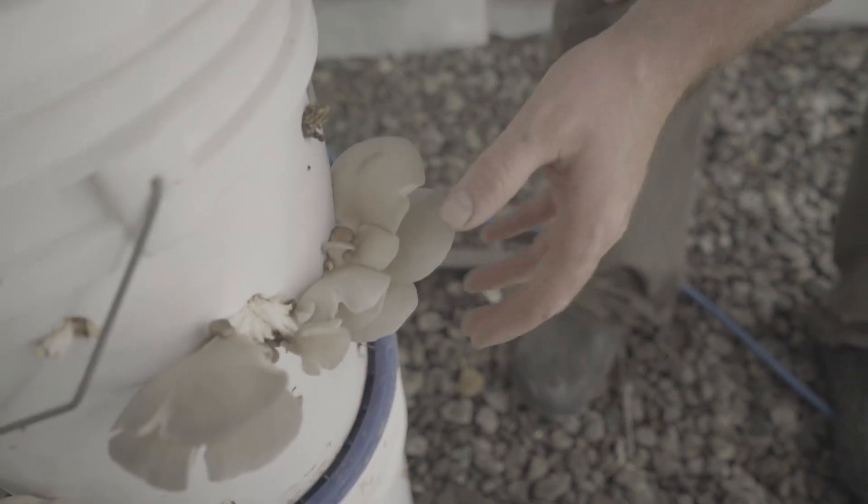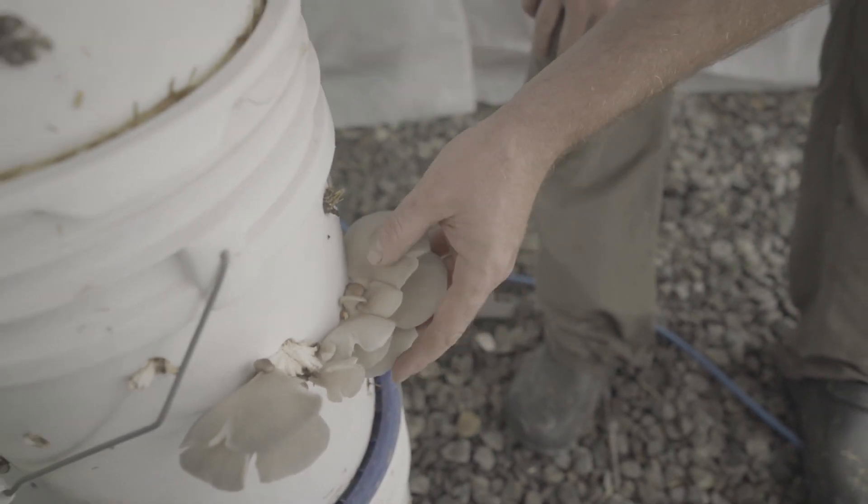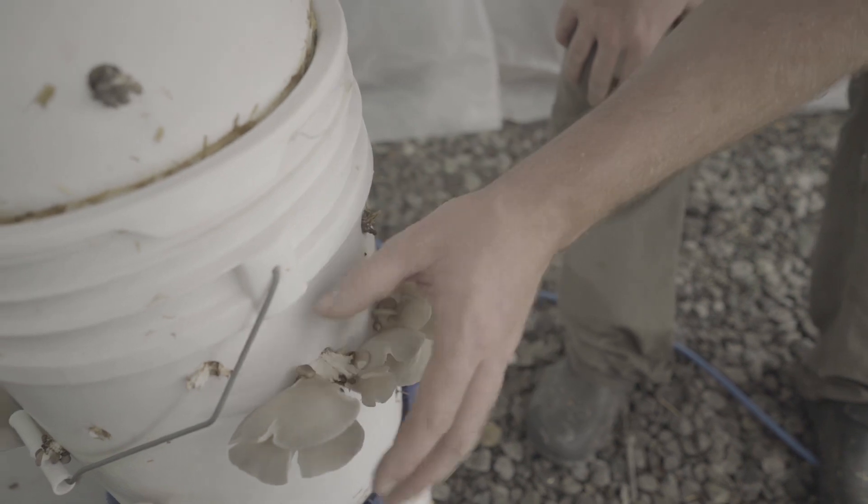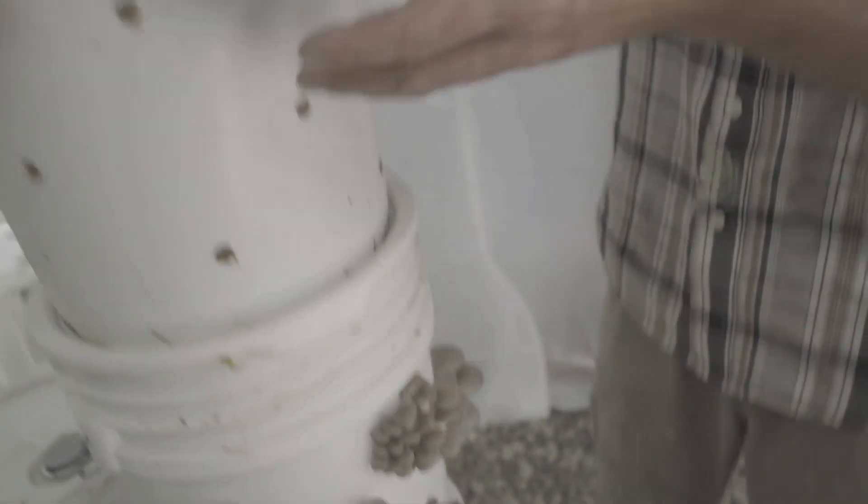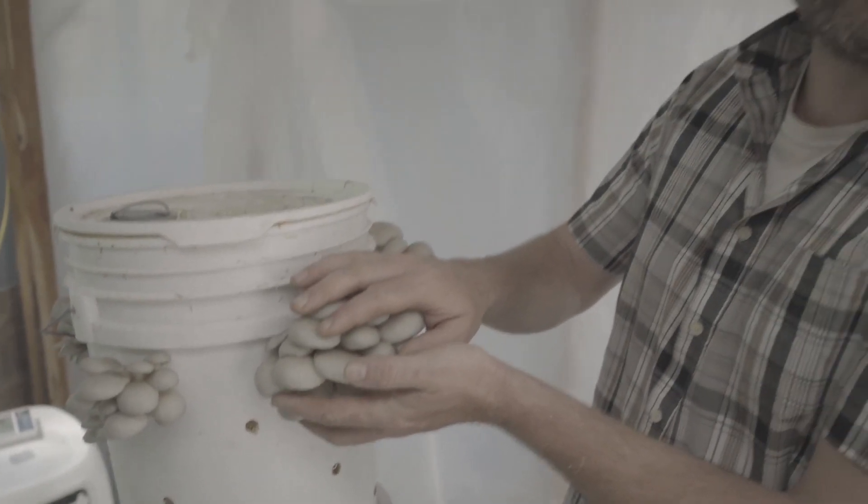And then down here are a bit overripe where they flattened out completely. All of these are perfectly edible, but these are going to last a lot less time in the fridge and they can get beat up and damaged versus if we harvest these, they're going to hold up until we get them to the market.